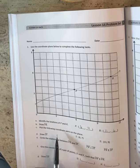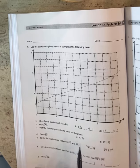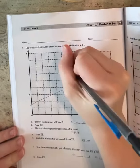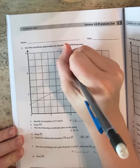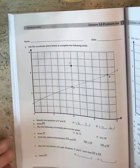Plot the following coordinate pairs on the plane. So we're doing S and T. S is at 6, 7. Here's 6, 7. This point is S. Notice that I am labeling the point. And then T is at 11, 9.